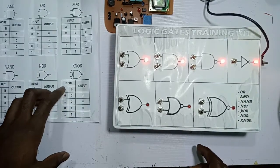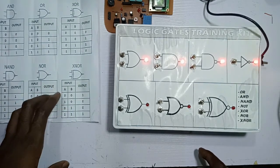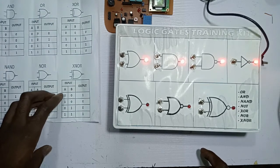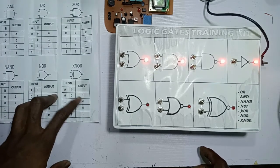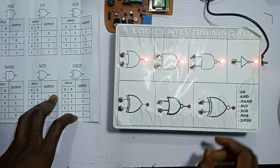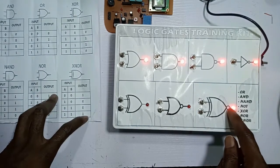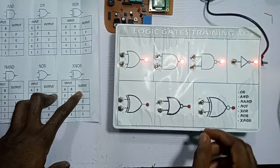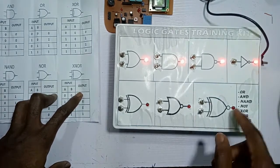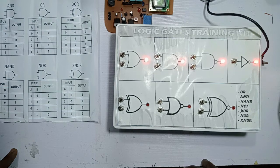For XNOR, the output will be one when the two inputs are the same. Here we have zero and zero, so I should be having one. We have one and one — I should be having one. Any other combination will give you zero. This is one and one, so it's one. This is zero and zero, so it's one. Any other combination will give you zero. That's it — if you like the video, do well to like, subscribe, and share. Thank you very much.